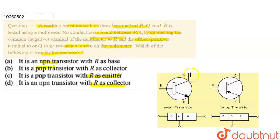Here we have a working transistor with its 3 legs marked as P, Q, R. We don't know which leg is which. No conduction is found between P and Q.